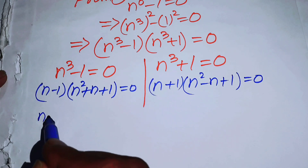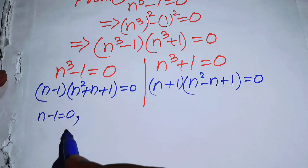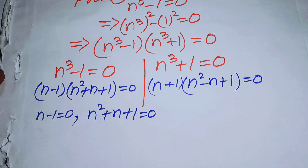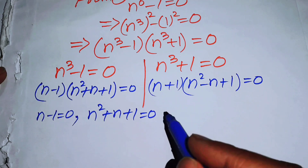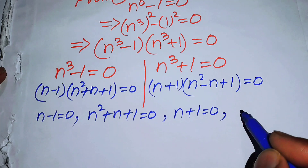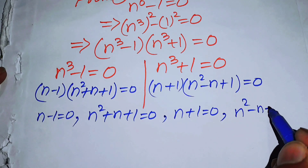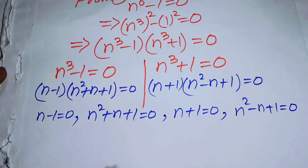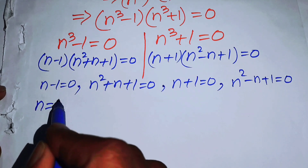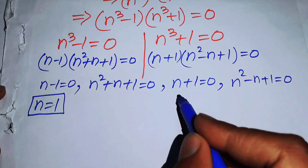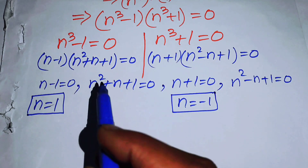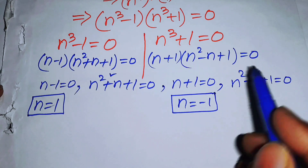This gives four possibilities: n - 1 = 0, n^2 + n + 1 = 0, n + 1 = 0, and n^2 - n + 1 = 0. From the first two, we get the real roots n = 1 and n = -1. Now we focus on the two quadratic equations.